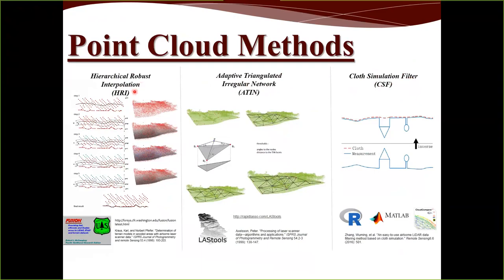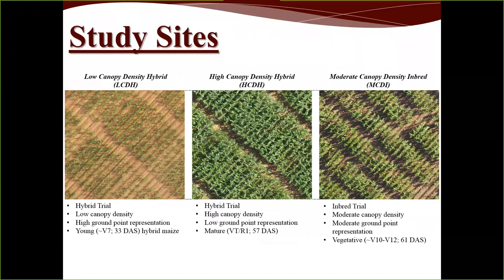The HRI works top-down, iteratively creating an intermediate surface until it converges on the ground based on set parameters. The ATIN method works bottom-up, identifying minimum-value points and building triangular networks with thresholds to determine whether points above known points are ground. The cloth simulation filter inverts the entire point cloud and lays a cloth mesh on the bottom surface, fitting it using several parameters.